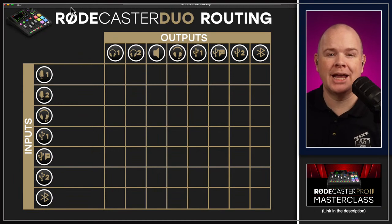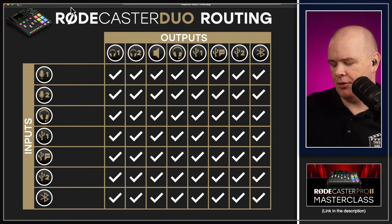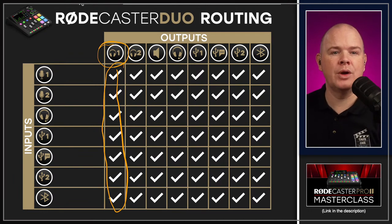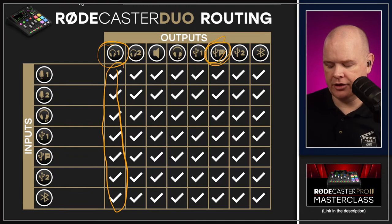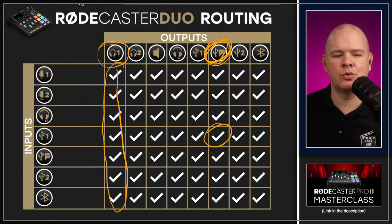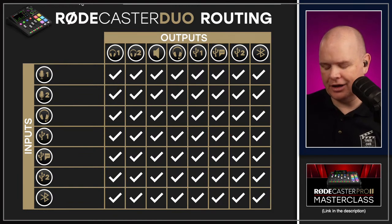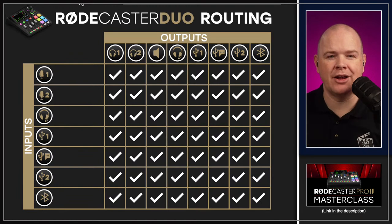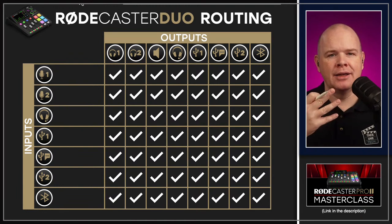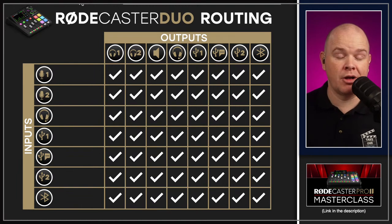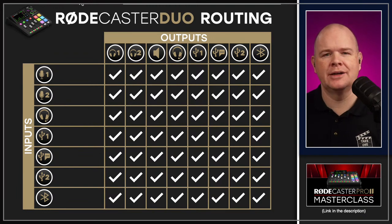Ordinarily, when you just plug the RODECaster in, the default behavior is that basically everything is going everywhere. If you're listening on headphones, you can hear all of the different things. The chat channel can hear USB one, for example — that's what the matrix shows. There is one caveat though: the default behavior of the monitor/speaker output is that when you've got an open mic, the speaker automatically mutes so that you don't get audio going out of the speaker and back into the mic causing issues. I'll come to that a little bit later.